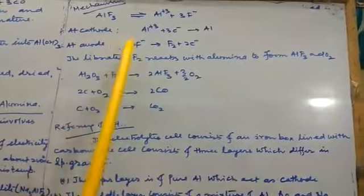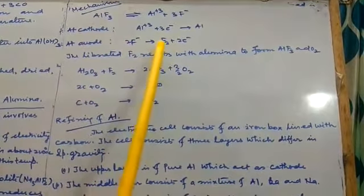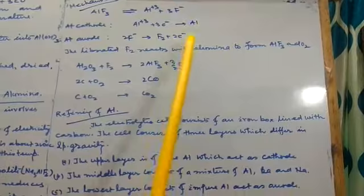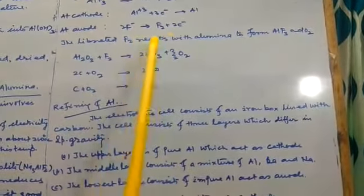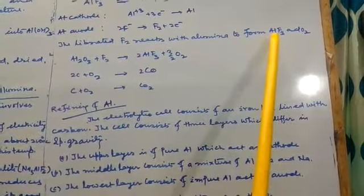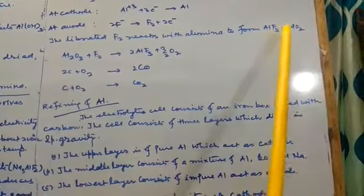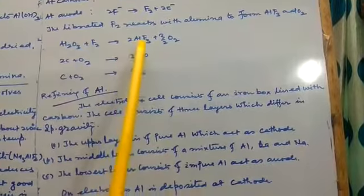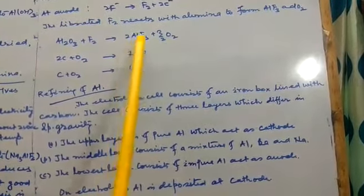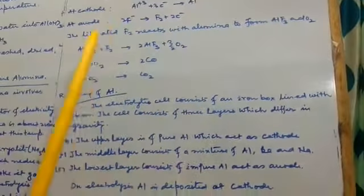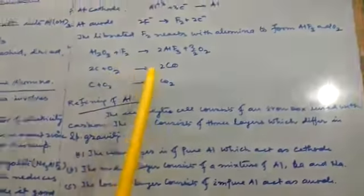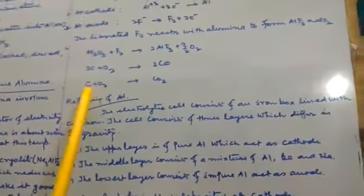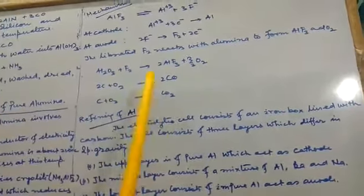At anode, 2F⁻ gives F2 plus 2 electrons. The liberated F2 reacts with alumina to form AlF3 and oxygen. Al2O3 plus F2 gives 2AlF3 plus 3/2 O2. And 2C plus O2 gives 2CO and C plus O2 gives CO2.